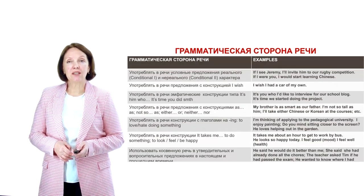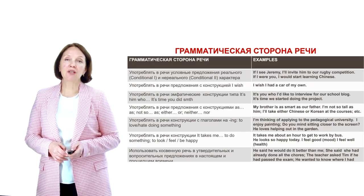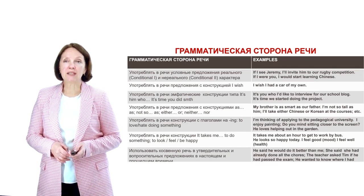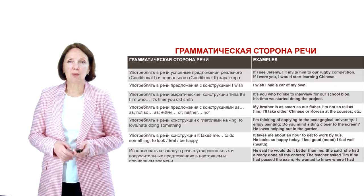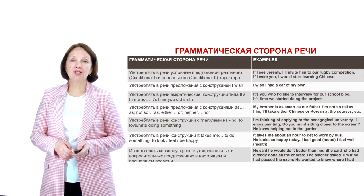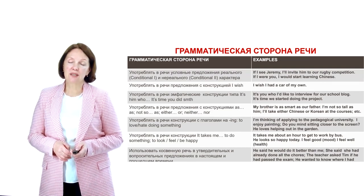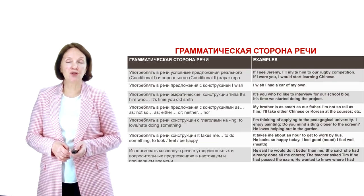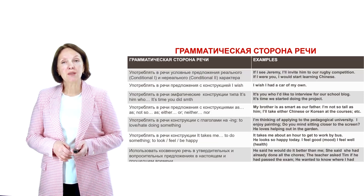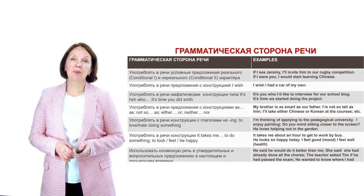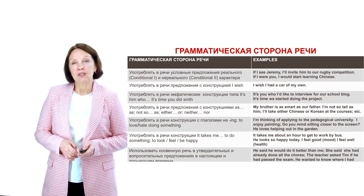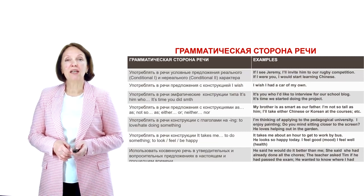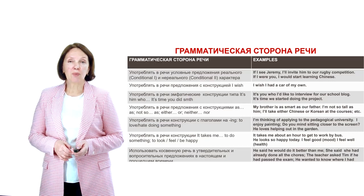В грамматической стороне речи необходимо правильно употреблять условные предложения реального и нереального характера: Conditional 1, Conditional 2. Например: If I were you, I'd definitely start learning Chinese. Необходимо уметь правильно употреблять различные коммуникативные типы предложений: утвердительные, вопросительные (общие, специальные, альтернативные, разделительные вопросы) в Present Simple, Future Simple, Past Simple, Present Perfect, Present Continuous. Также отрицательные и побудительные предложения в утвердительных и отрицательных формах. Распространенные и нераспространенные простые предложения, в том числе с несколькими обстоятельствами, следующими в определенном порядке.